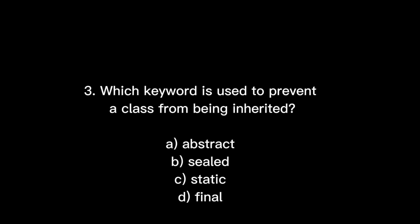Question: Which keyword is used to prevent a class from being inherited? Options: A is abstract, B is sealed, C is static, D is final. The correct answer is B — sealed. As covered in the OOP explanation, the 'sealed' keyword prevents a class from being inherited.